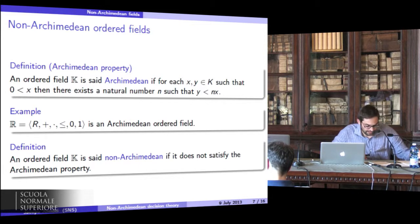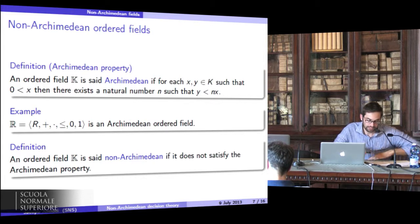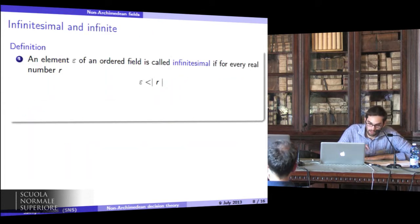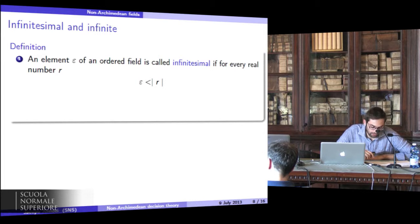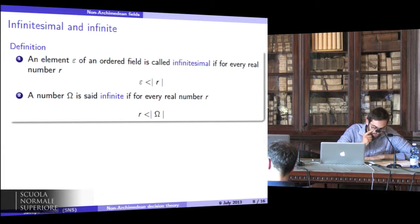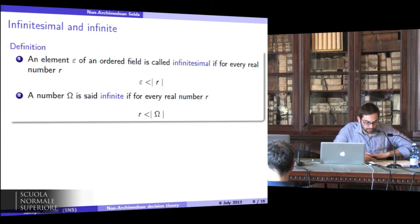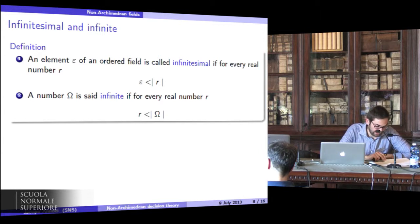Okay, we can see now how it's possible to express quantities infinitely small and infinitely large in a non-Archimedean field. An element epsilon of an ordered field is called infinitesimal if for every real number r, epsilon is less than r. So infinitesimals are numbers smaller than all positive real numbers. A number omega is said infinite if for every real number r, r is less than the absolute value of omega. So infinites are numbers whose absolute value is larger than all real numbers.